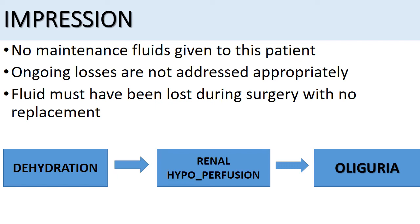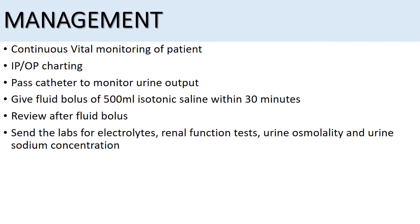As for orders: you would advise continuous vitals monitoring, input and output charting — and for output charting, of course, you have to insert a catheter to monitor urine output. Then you will give a fluid bolus of 500 ml isotonic saline within 30 minutes. After this fluid bolus, you will review the patient to see if any urine has been passed. If some urine has been passed, you will collect that sample and send it for urine osmolality and urine sodium concentration.